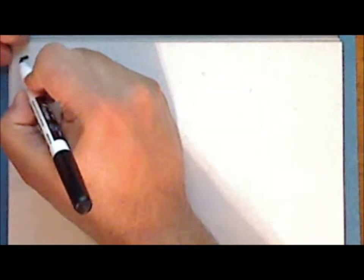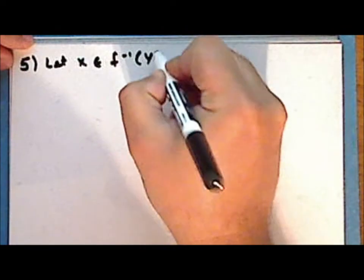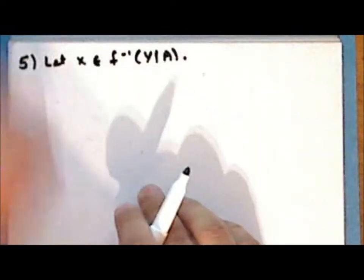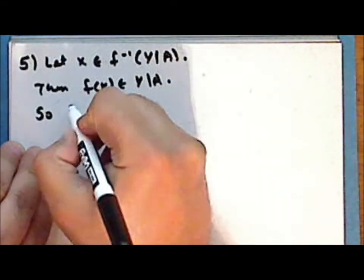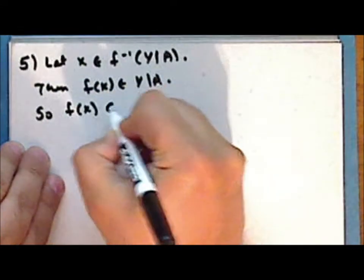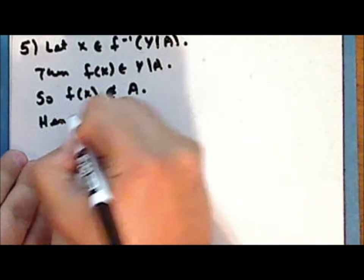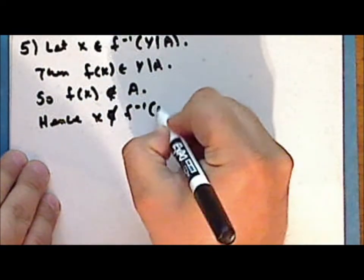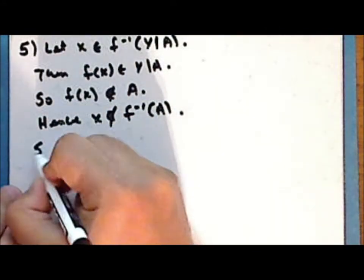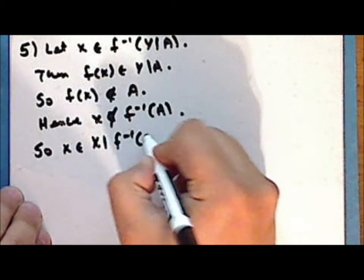So fifth statement: let x be a point in the inverse image of the complement of the set a in y. Then f of x is in this complement, so the point f of x is not in the set a. And hence, the point x is not in the inverse image of the set a. So the point x is in the complement of the inverse image of a in x.